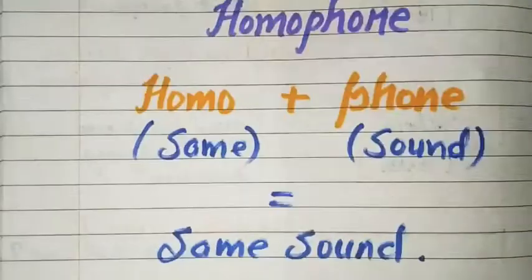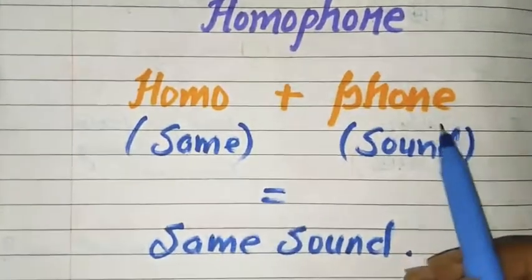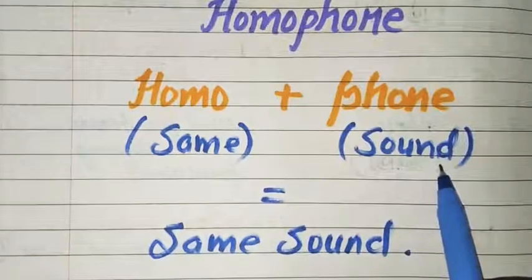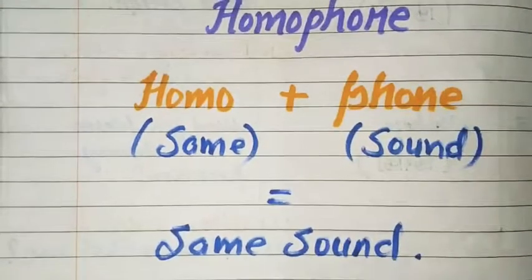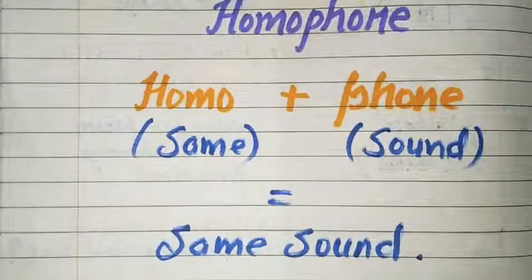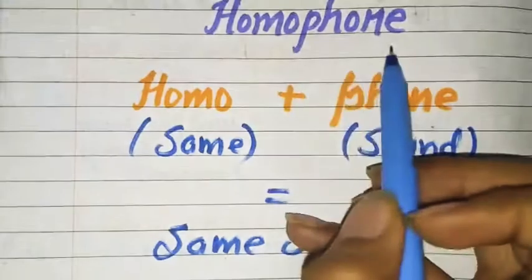Aapko pata hai? Homo ka matlab hota hai 'same,' and phone ka matlab hota hai 'sound.' Toh milkar kya bana — same sound? Matlab, same sound wale words homophones kehlaate hai. Bolne ya sunne mein jo words same lagte hai, unhe hum homophones kehte hai.